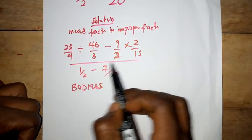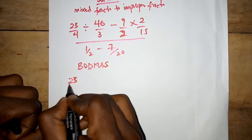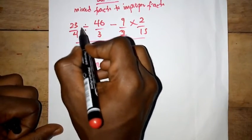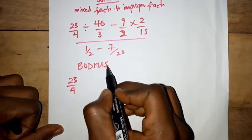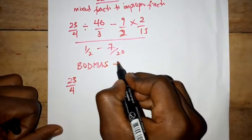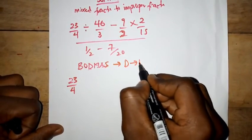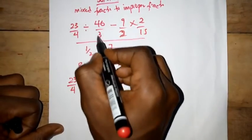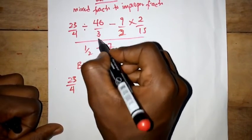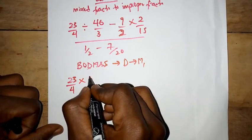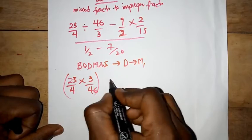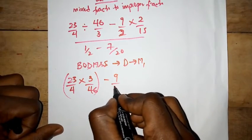We have 23 over 4. For division, we have to change the division into multiplication. To change from division to multiplication, we interchange the numerator and denominator — so 3 goes up and 46 comes down, giving us 3 over 46. Then we deal with the minus 9 over 2 part.